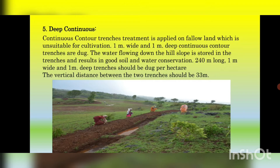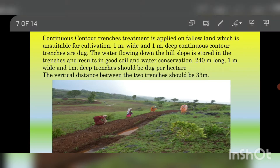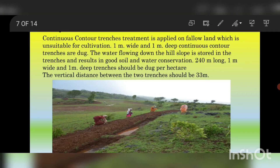Deep contour trenches also help to prevent soil erosion. Due to water seeping into the mountainous region, the groundwater table lasts longer and helps increase grass conservation.